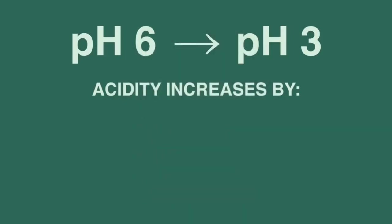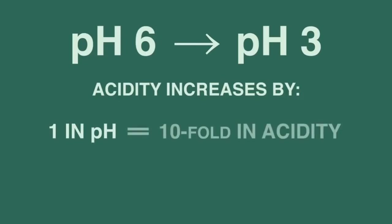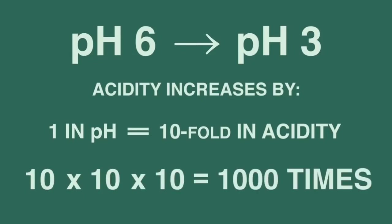Remember that each change of one in pH is a tenfold change in acidity, so changing from 6 to 3 is ten times ten times ten, or a thousand times more acidic.